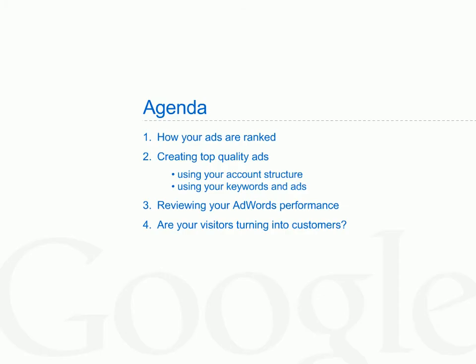Here's the agenda for this session. We'll first cover how ads are ranked and how to create top quality advertising. We'll then take a look at how you can review your ad performance and finally, how you can see which visits to your site are resulting in sales. At the end of this session, you should have a good grasp of how to understand and improve your account performance.